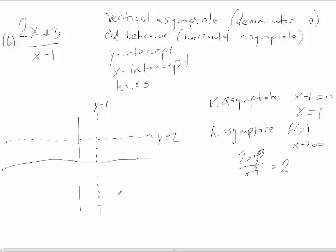The y-intercept is where x = 0. In this case we have 2(0) + 3 over 0 − 1, which gives us 3 over negative 1, or negative 3. So the y-intercept is at (0, −3).